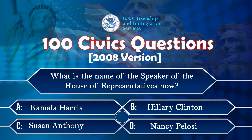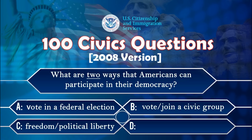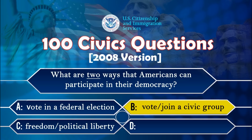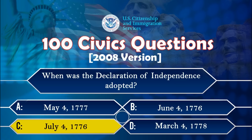What is the name of the Speaker of the House of Representatives now? Nancy Pelosi. What are two ways that Americans can participate in their democracy? Vote. Join a civic group. When was the Declaration of Independence adopted? July 4, 1776.